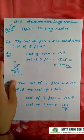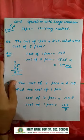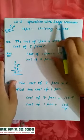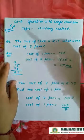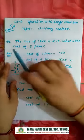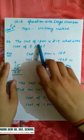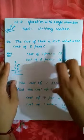Good morning students, how are you? Today we will learn about the next topic: Chapter number two, operations with larger numbers, topic unitary method. So let us start. For example, the cost of one pen is 15 rupees. What is the cost of five pens?